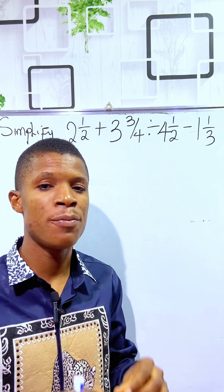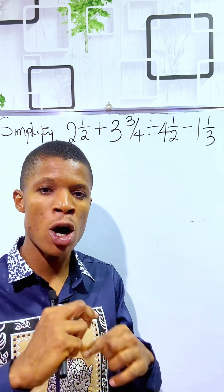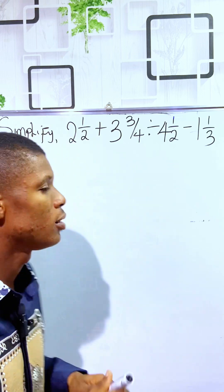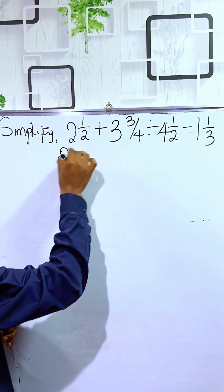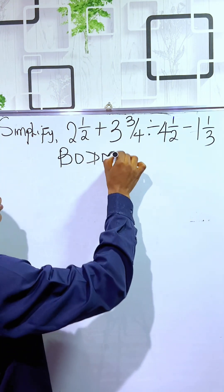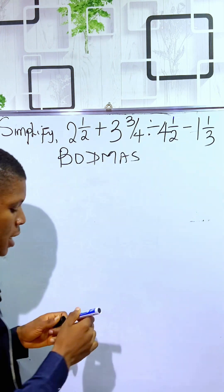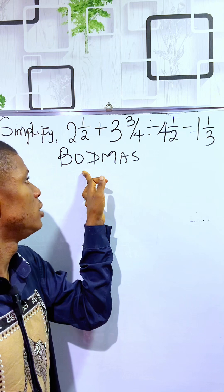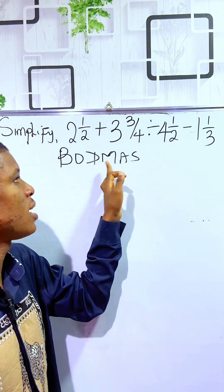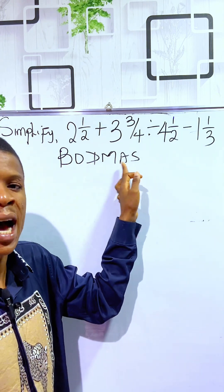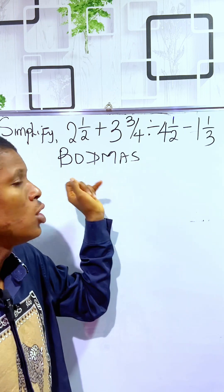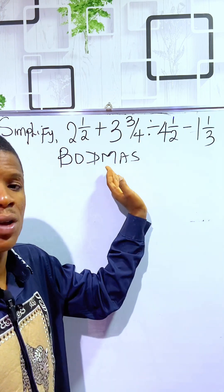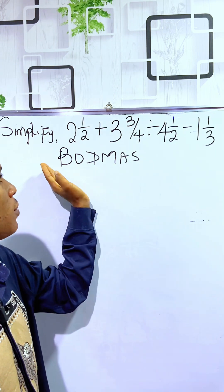To do that, we make use of BODMAS so that we can obey all the orders of operation. We have BODMAS, meaning B stands for bracket, O stands for order, D stands for division, M stands for multiplication, A for addition, and S for subtraction. So, we are going to treat all this, apply all this, starting from the right.